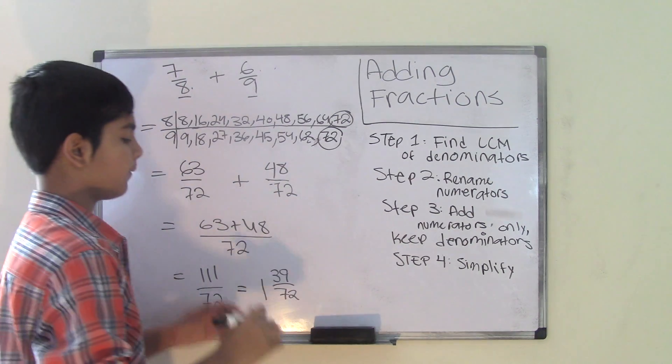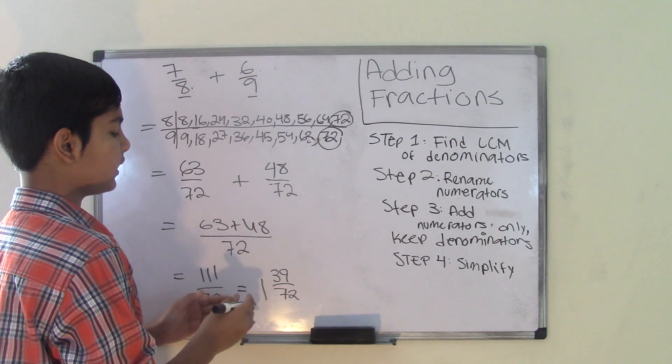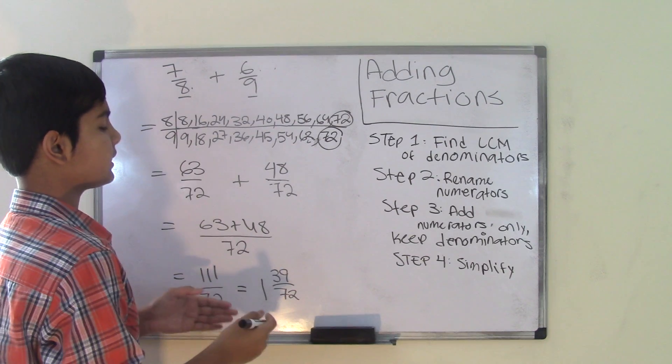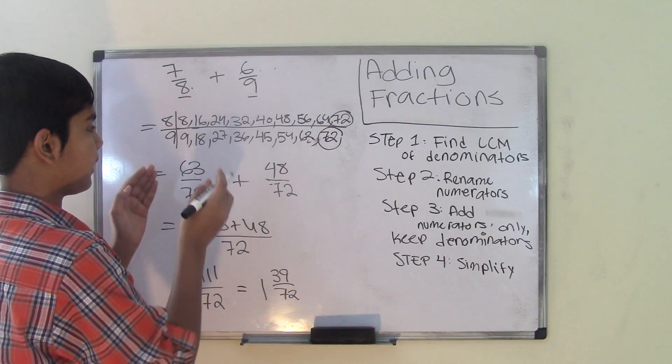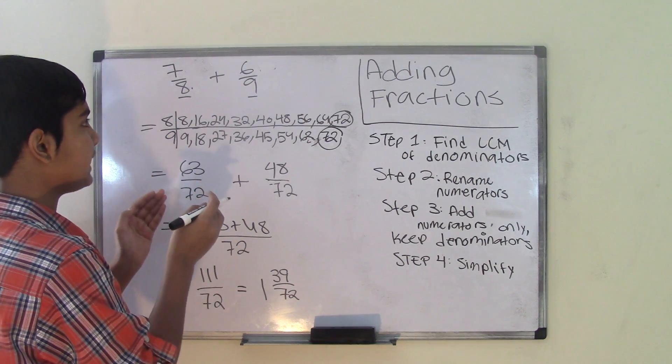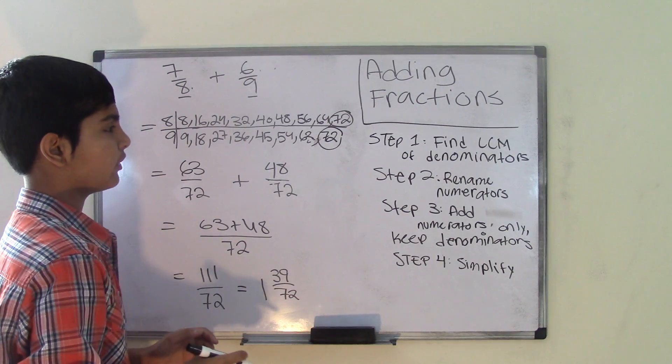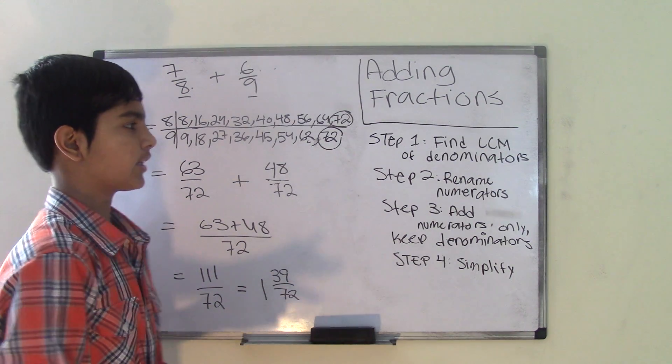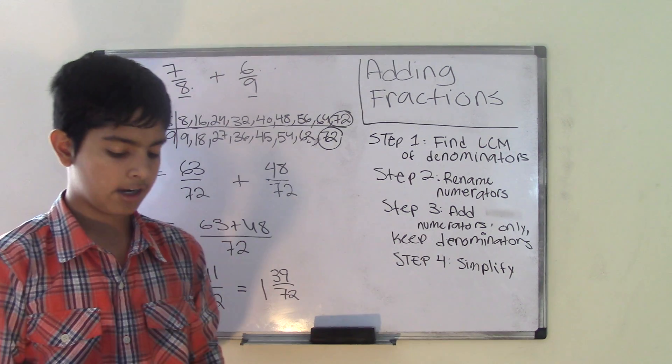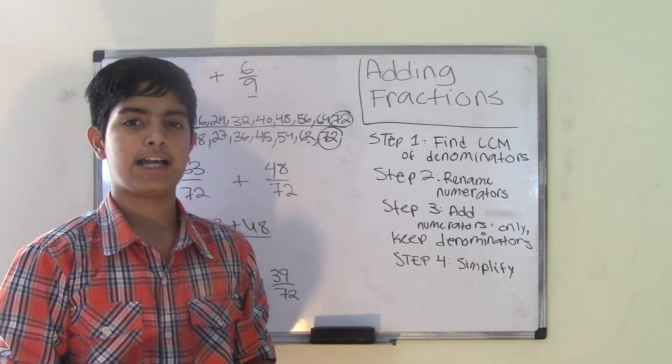So now we have our final answer, which is 1 and 39 over 72, which is the sum to the problem 7 over 8 plus 6 over 9. This is how you add fractions. Check out our blog at everyonestaysmathlab.com. We'll see you guys next time. Bye.